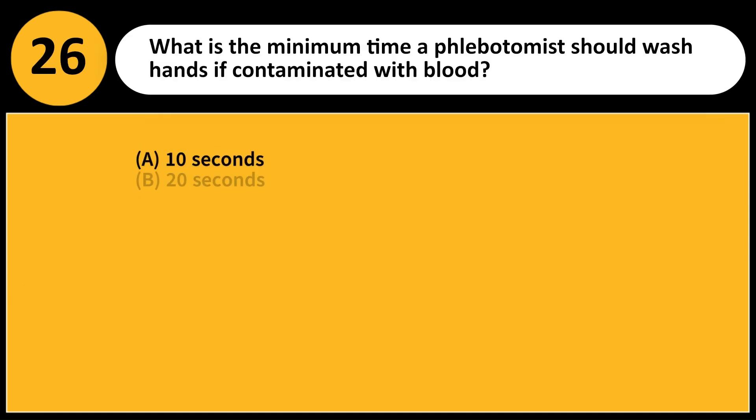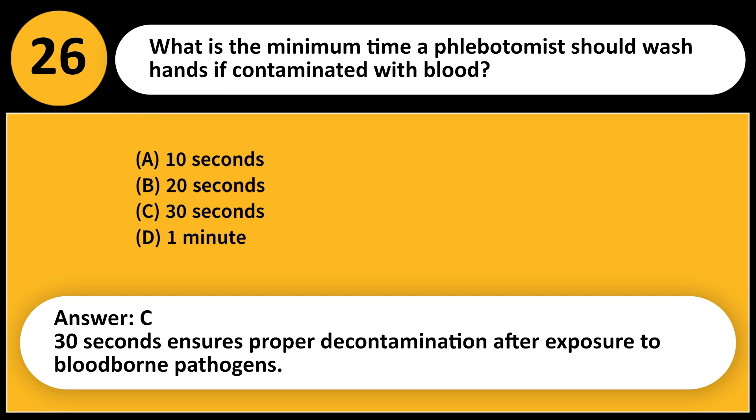What is the minimum time a phlebotomist should wash hands if contaminated with blood? A. 10 seconds. B. 20 seconds. C. 30 seconds. D. 1 minute. Answer: C/D. 30 seconds ensures proper decontamination after exposure to blood-borne pathogens.